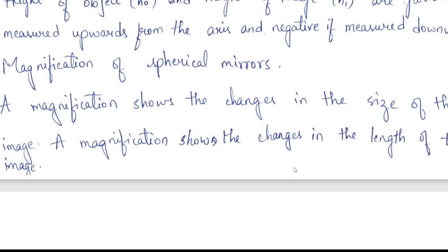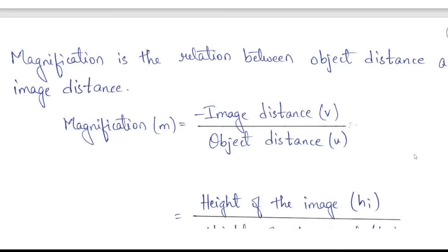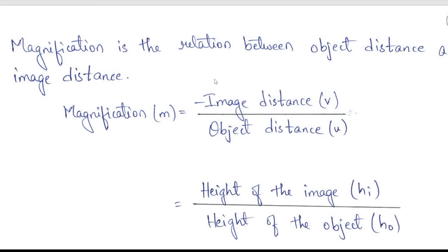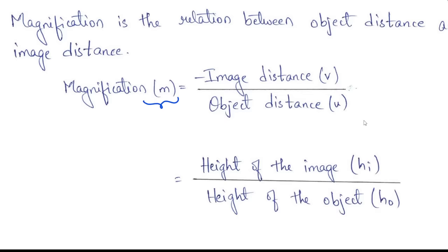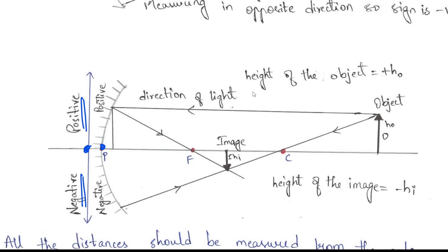Magnification of spherical mirrors shows the change in size of the image compared to the object. Magnification m equals image distance v divided by object distance u, or equivalently height of image h_i divided by height of object h_0. So magnification is the ratio of image distance to object distance.